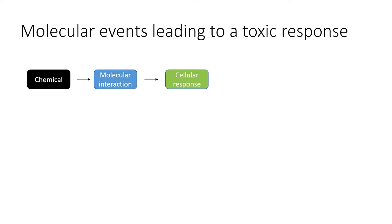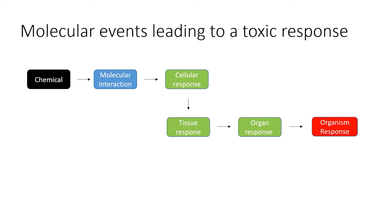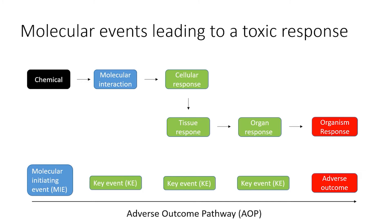The knowledge on how an initial interaction with a biological system, through a series of intermediate key events, results in an eventual adverse outcome is called adverse outcome pathways. Comparing laboratory findings with known AOPs may help to predict possible adverse outcomes from relatively easy laboratory experiments. In addition, the identification of specific key events connected to specific adverse outcomes can help to design standardized in vitro tests.